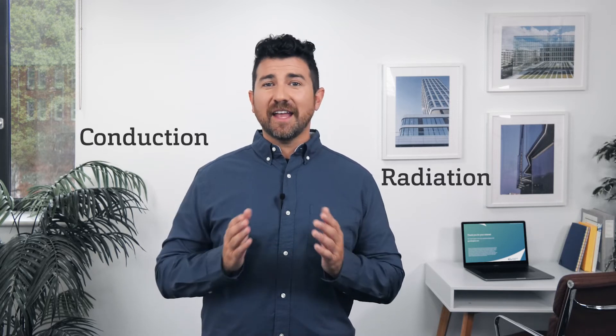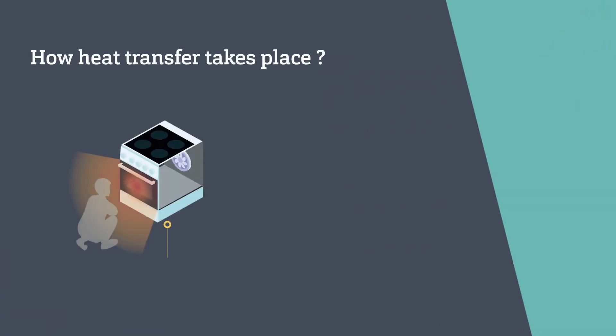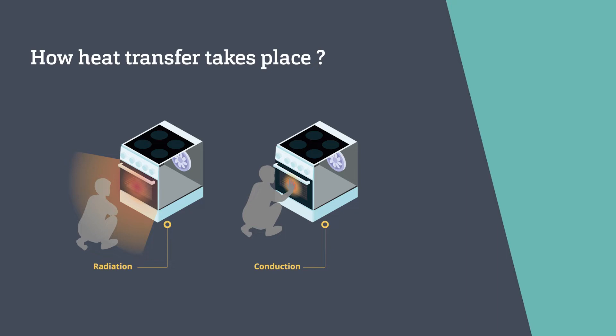Heat transfer takes place through three mechanisms: radiation, conduction, and convection. Let's consider an oven. Radiation is heat transfer by electromagnetic energy—long-wave radiation is emitted from the interior of the oven. Conduction is heat transfer through direct contact.